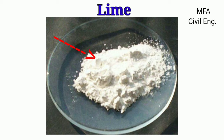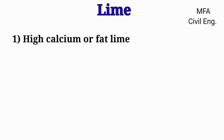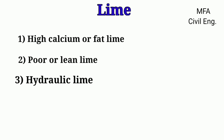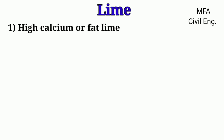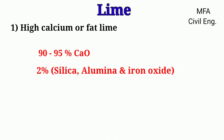On the basis of chemical composition, limes are classified into several types: high calcium or fat lime, poor or lean lime, hydraulic limes, and dolomitic lime. High calcium lime contains 90 to 95 percent calcium oxide and less than 2 percent of silica, alumina, and iron oxide.